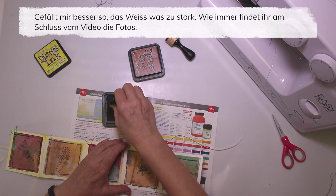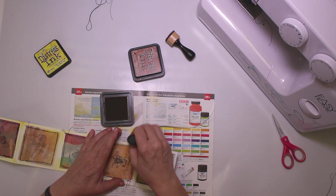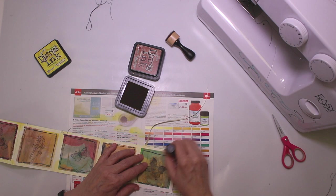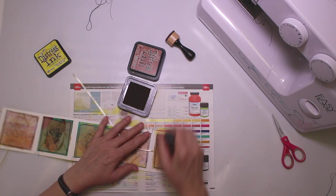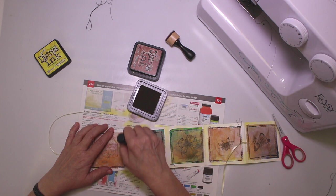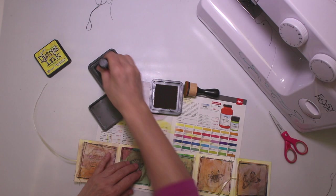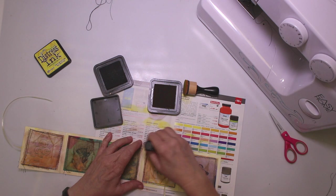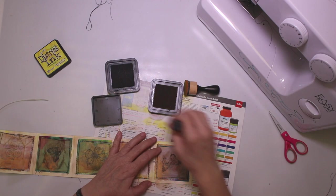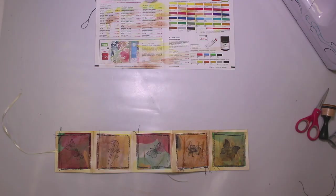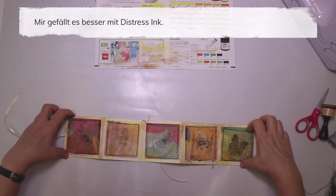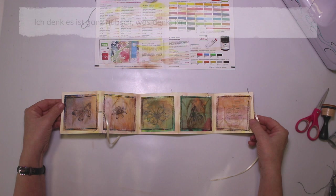As usual, you will find a picture at the end of the video with the close-up so you can see better the details and the colors. Okay, I like it much better now with a little bit of distress ink. I think it is cute. What do you think?